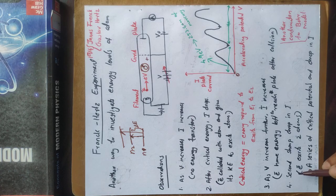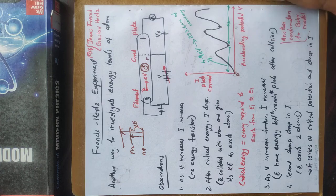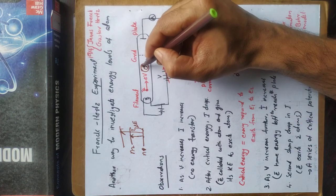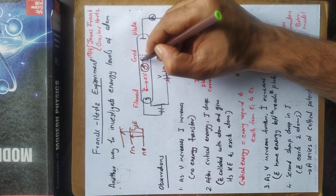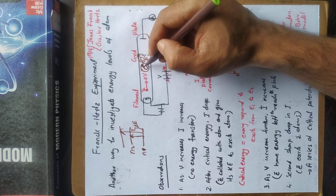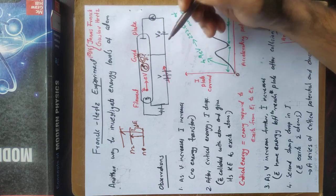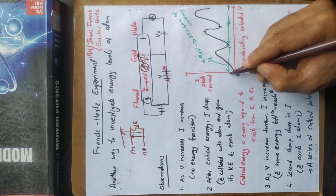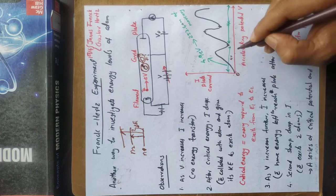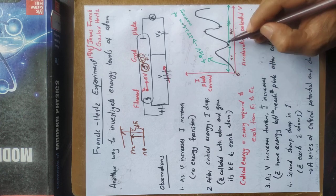Eventually another sharp drop in current occurs. If the first drop is at 4 volts, the second is at 8 volts. That corresponds to two times the difference between the energy levels of this atom — two or more inelastic collisions occurring.